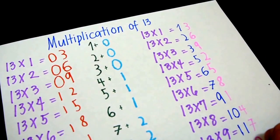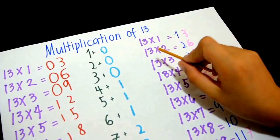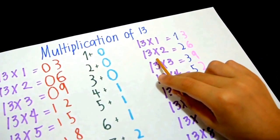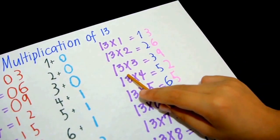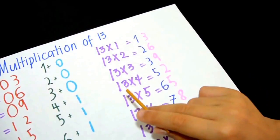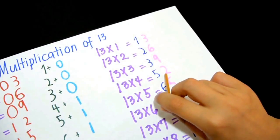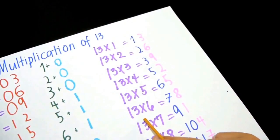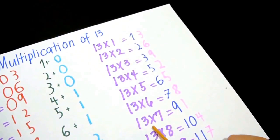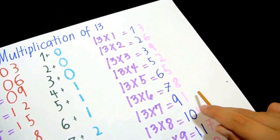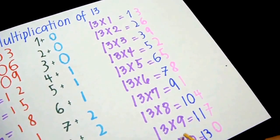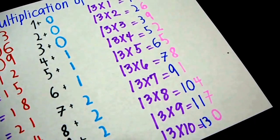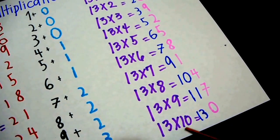So now let's check. 13 times 1 is 13, 13 times 2 is 26, 13 times 3 is 39, 13 times 4 is 52, 13 times 5 is 65, 13 times 6 is 78, 13 times 7 is 91, 13 times 8 is 104, 13 times 9 is 117, and 13 times 10 is 130.